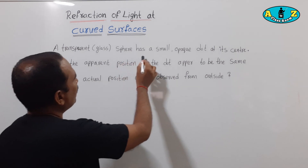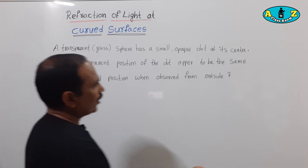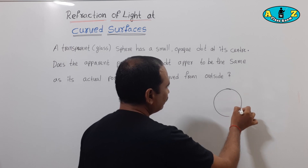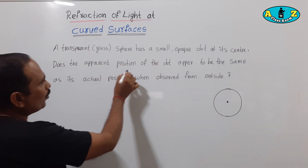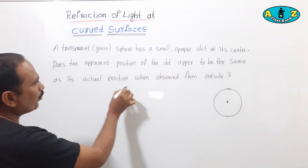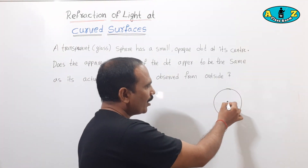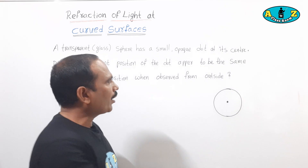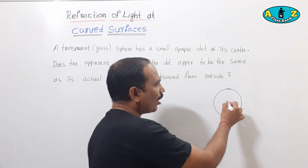A transparent glass sphere has a small opaque dot at its center. Here, one glass sphere is there, and at its center there is one dot. Does the apparent position of the dot appear to be the same as its actual position when observed from the outside? So we are observing from the outside — is its apparent position the same as its actual position or not?